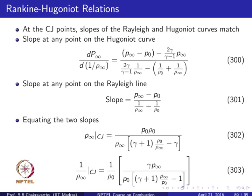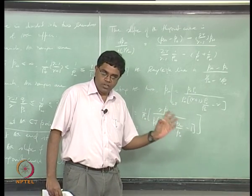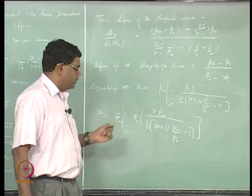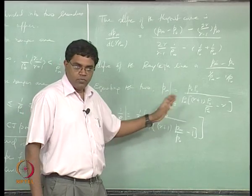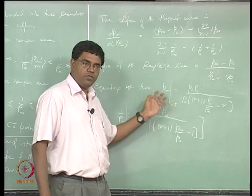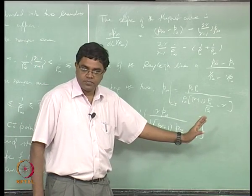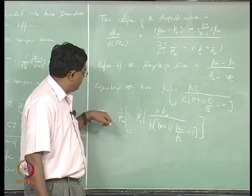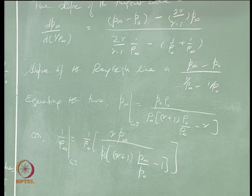To get the actual coordinates — p∞ and 1/ρ∞ expressed only in terms of p₀, ρ₀, and q — we need to eliminate the cross-dependence. We substitute either of the slope-matching expressions into the Rankine-Hugoniot relation, which will eliminate one unknown and yield a quadratic in the remaining variable.